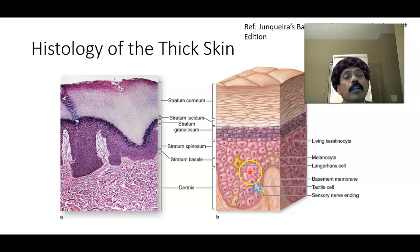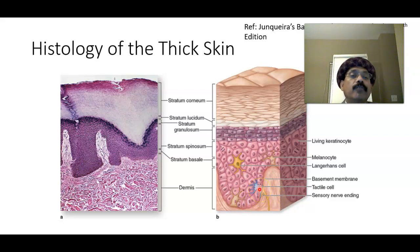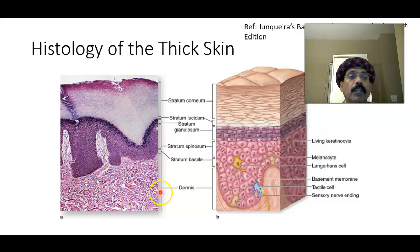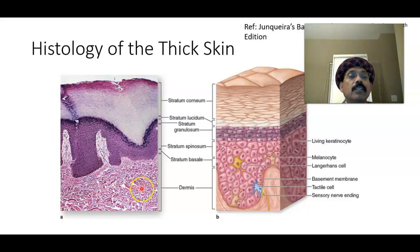We also get some non-keratinocyte cells: the Langerhans cell, which is the antigen-presenting cell; tactile cells associated with sensation, also called Merkel discs; and melanocytes, which are derived from neural crest cells and give the pigmentation of the skin. The dermis has two layers: the papillary layer, which is loose connective tissue, and the reticular layer, which is dense irregular connective tissue rich in collagen and elastic fibers.